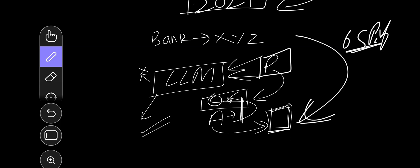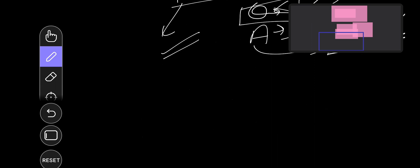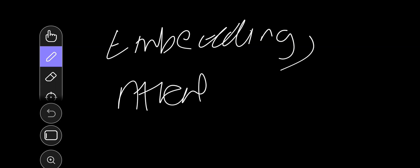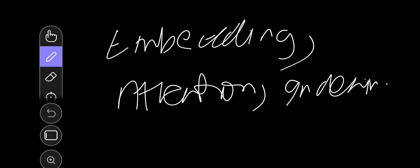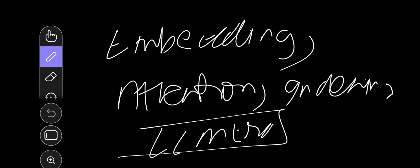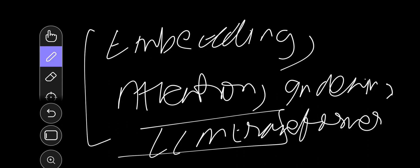I hope you guys have a basic idea of how LLMs work — specifically how embeddings work, how attention and indexing work, and a basic overview of the transformer architecture. These four or five things you need to know for understanding RAG in detail.